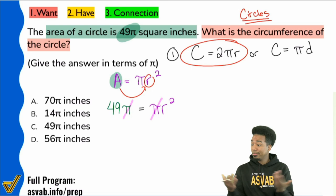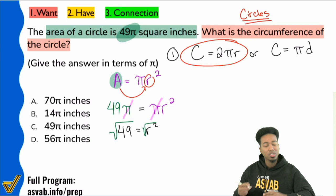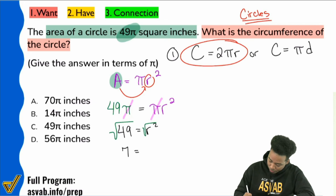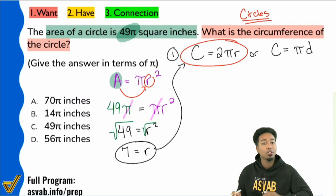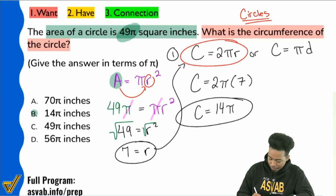Setting up: 49π equals πr². Divide π on both sides — it cancels out. So 49 equals r². Take the square root of both sides: 7 times 7 is 49, so r equals 7. Now that we have the radius, plug it into the circumference formula: circumference equals 2 times π times 7. Two times 7 is 14, so the answer is 14π. That's choice B.